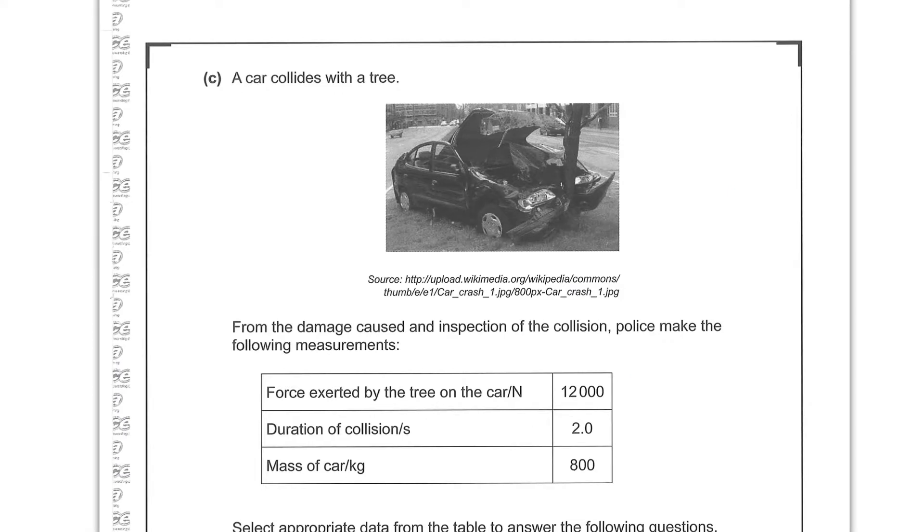Part C. A car collides with a tree. From the damage caused and inspection of the collision police make the following measurements. That the force exerted by the tree on the car in newtons is 12,000 newtons. That the duration of the collision is 2 seconds. And that the mass of the car is 800 kilograms. Now that value of 800 kilograms seems a bit low for the car in the picture. But maybe they couldn't get the right picture. 2 seconds seems very long for a collision with a tree.